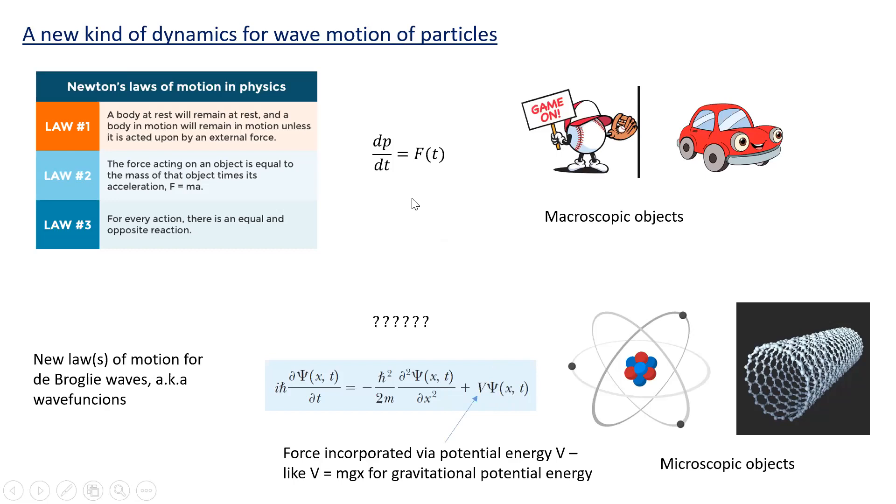A couple of points here. The force in Newton's law is included directly, so we might have force equals mg or kq₁q₂/r² for electrical charge. But in this equation, which is called the Schrödinger equation, the force is incorporated via a potential energy V. Remember that forces can be derived from potential energies, and the most familiar example you might remember is that the potential energy of an object above the ground is mgx, where x is the distance from the ground, that's the gravitational potential energy. But this could be other potential energies, like the potential energy of an electron in an atom, which is minus ke²/r, in the case of the hydrogen atom.